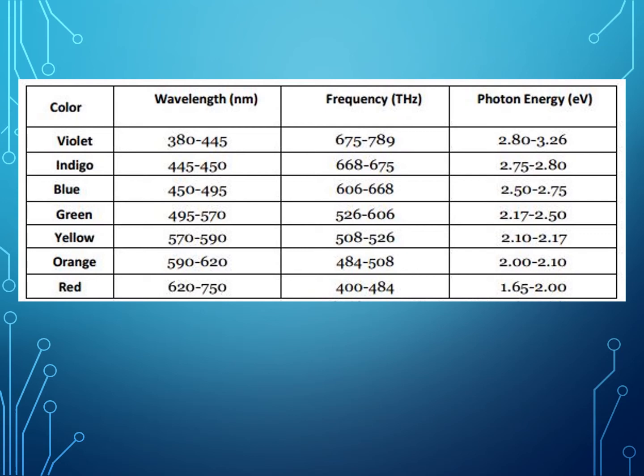In the normal presentation of ROY-G-VIV, red has the least energy and violet has the greatest energy. In all of the colors, violet has the greatest energy. Blue ranges from 2.50 to 2.75 electron volts, and red ranges from 1.65 to 2.00 electron volts.